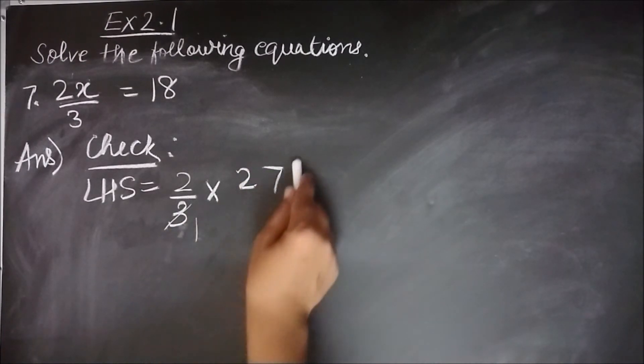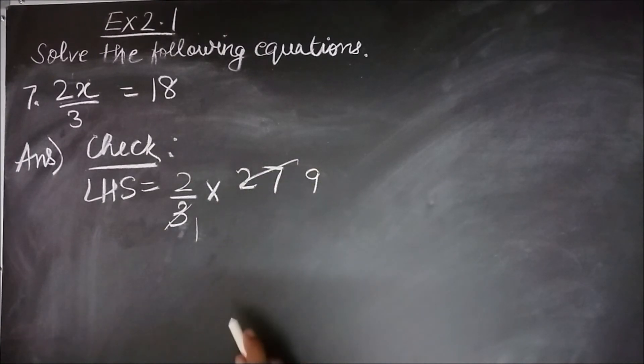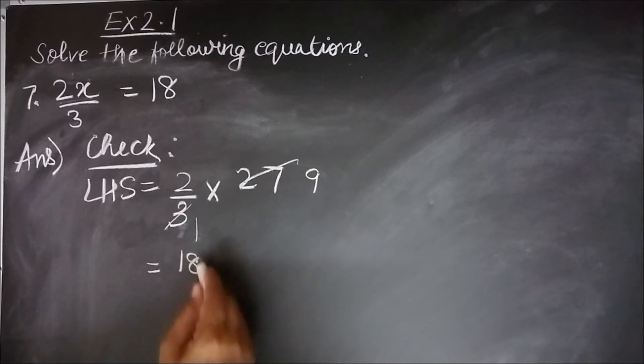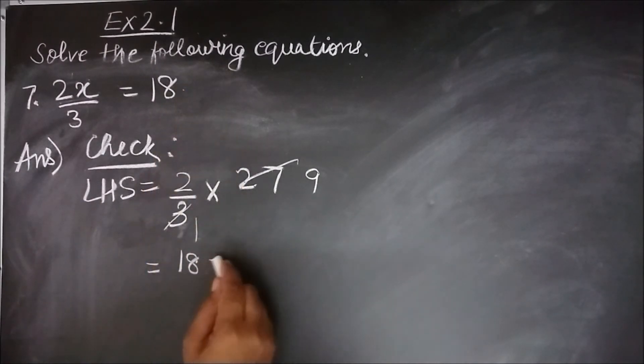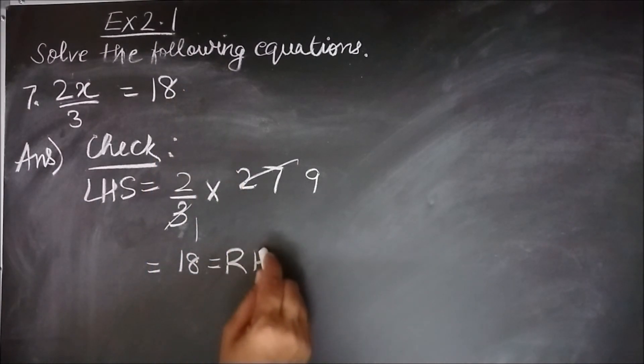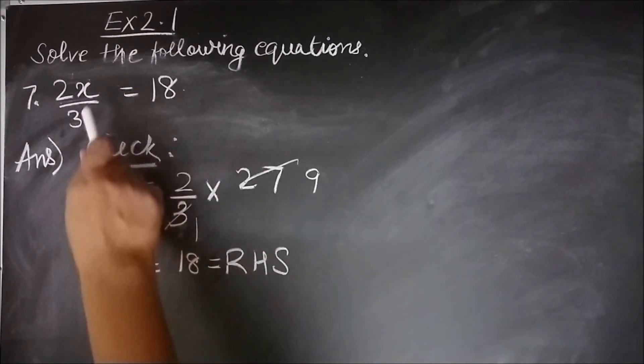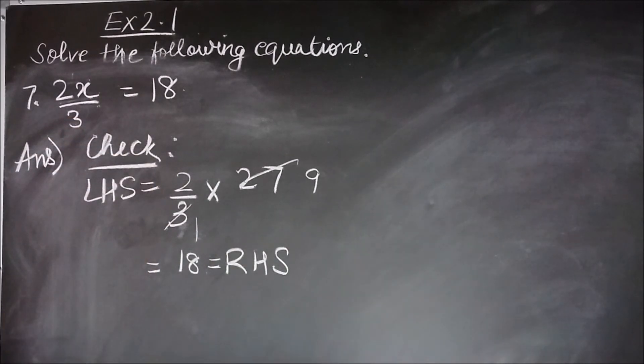Cancellation. 3 ones are 3, 3 nines are 27. 2 into 9 is 18, which is same as my right hand side. So I see here that my balance is maintained. My left hand side is equal to right hand side. When I substitute the value of x here, my solution x equal to 27 is correct.